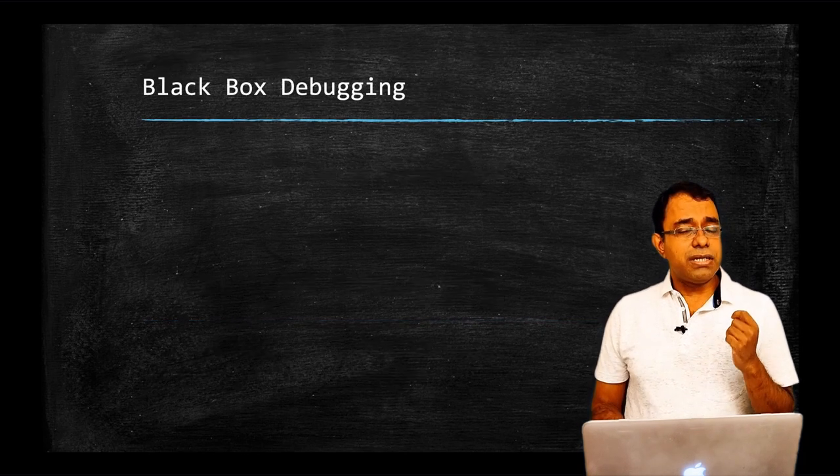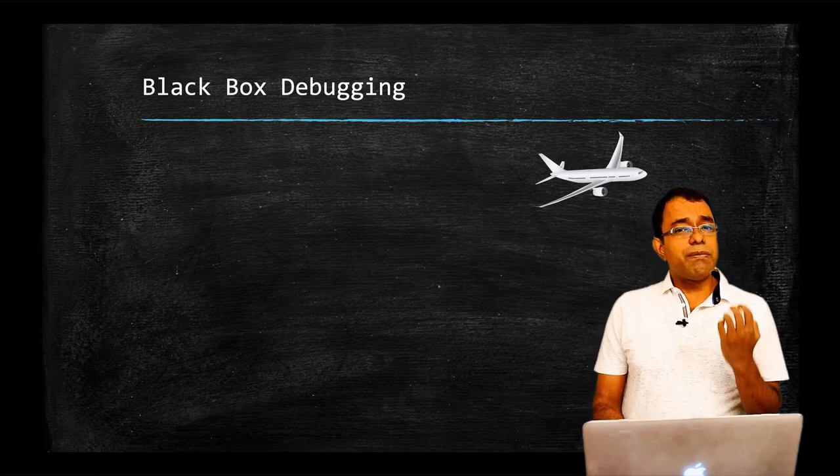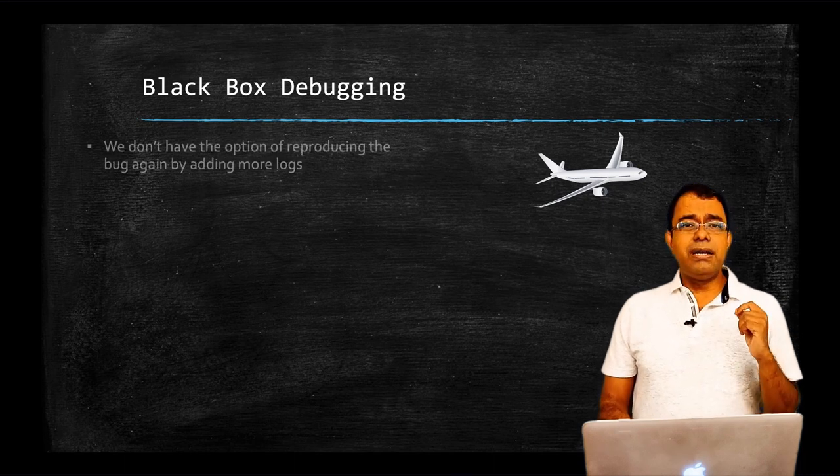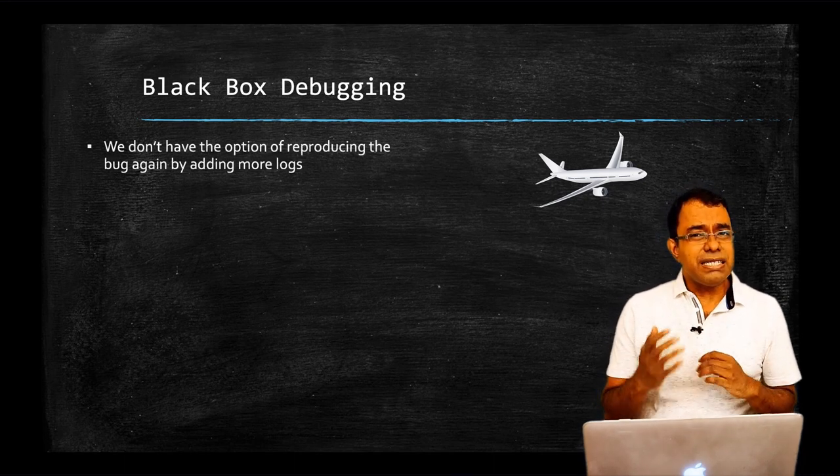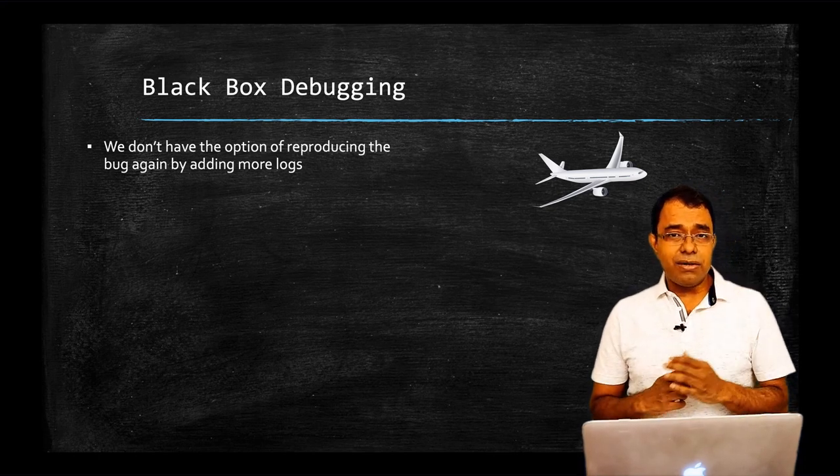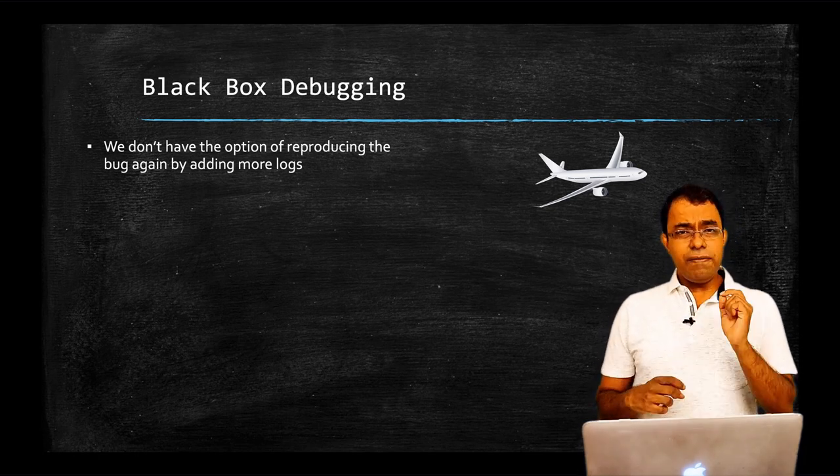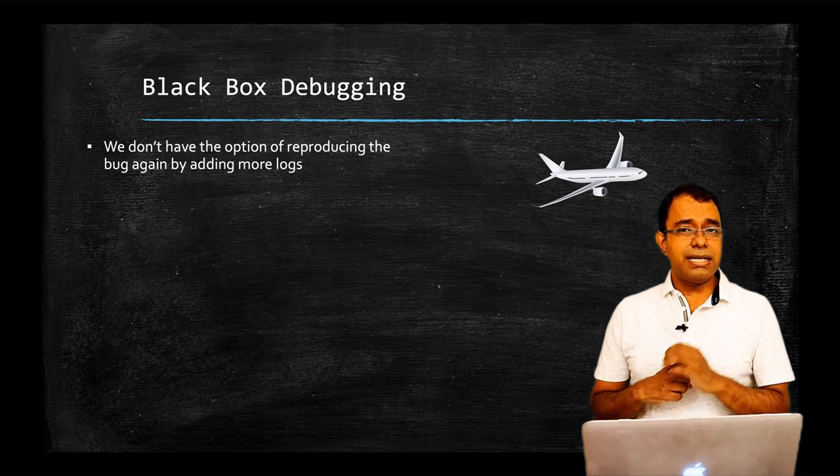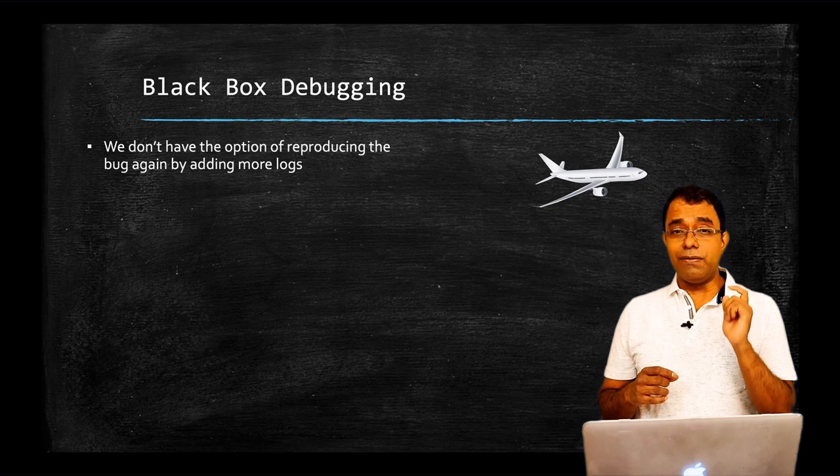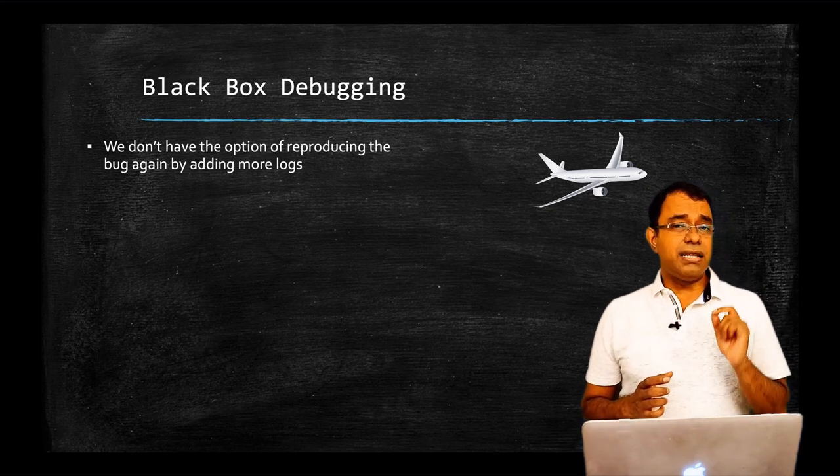Now whenever we talk about black box debugging, something comes to our mind, this picture, because black boxes are generally associated with airplanes. So if something goes wrong in the airplane, can we say that we will patch the system with additional logs and wait for problem to re-occur so that we can find the root cause? If we even say that, government will cancel the license, stock prices will go down and the company may even have to file for bankruptcy. We cannot do that because it's a life and death situation.